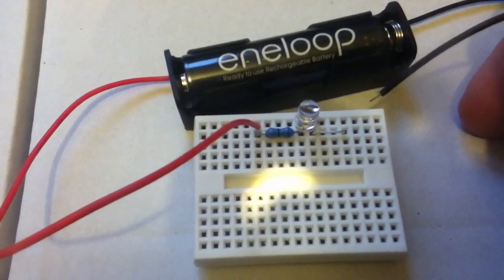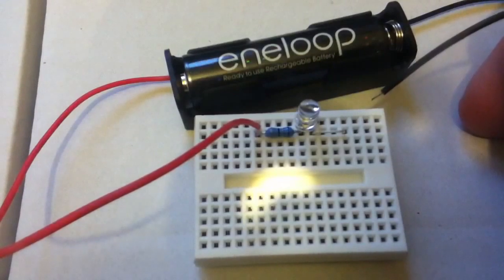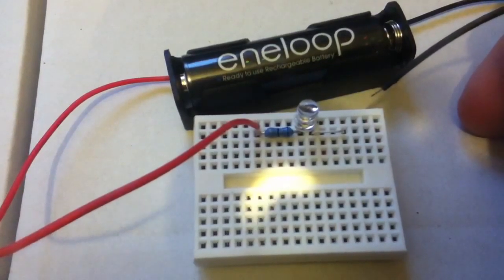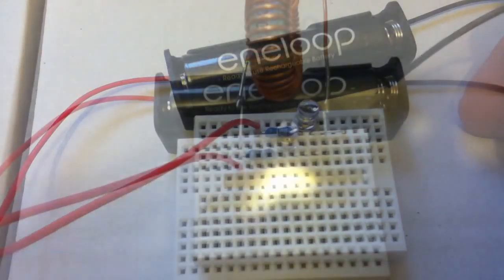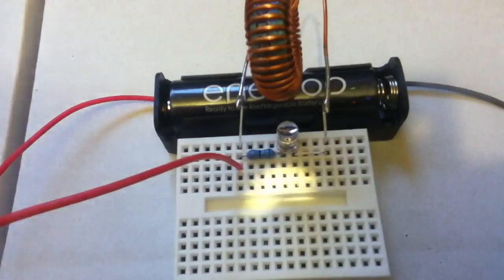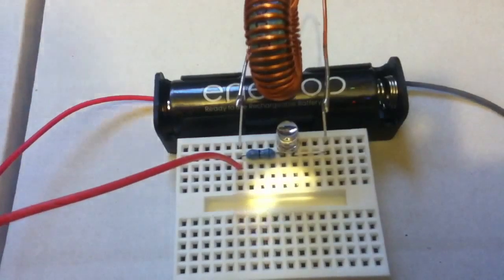But there is one way to overcome both these problems—both the inadequate voltage and the incorrect polarity—by just introducing one component. And the component that's going to do this is an inductor.